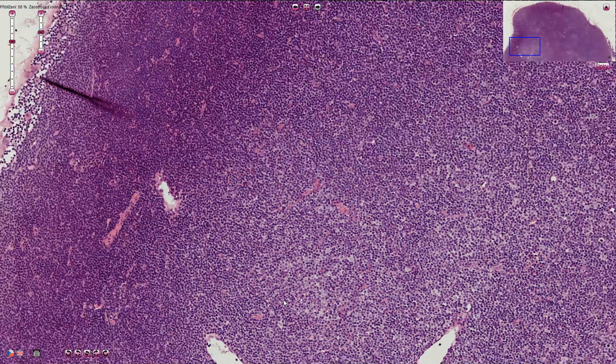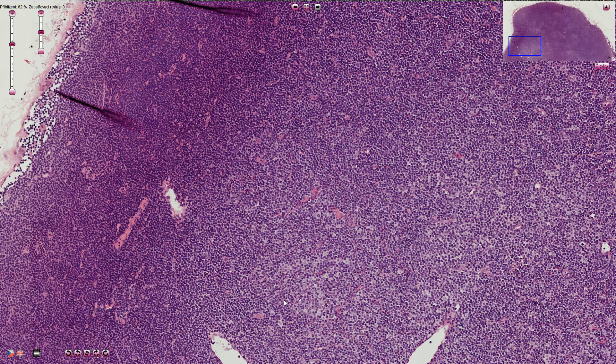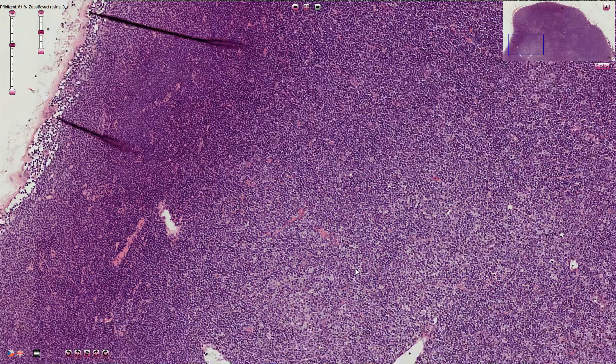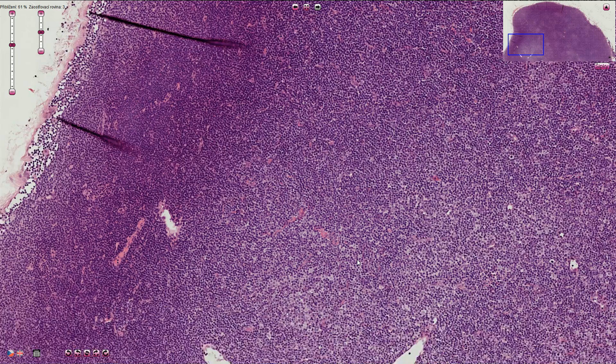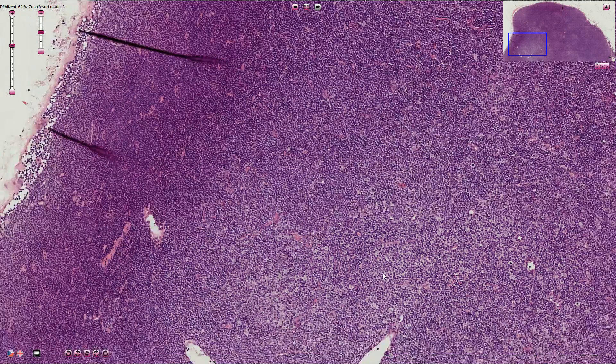We always need to use immunohistochemistry to exclude other lymphomas. They can look very similar. So the neoplastic cells in this case express B markers like CD19, CD20, and most importantly they express CD5 and CD23.